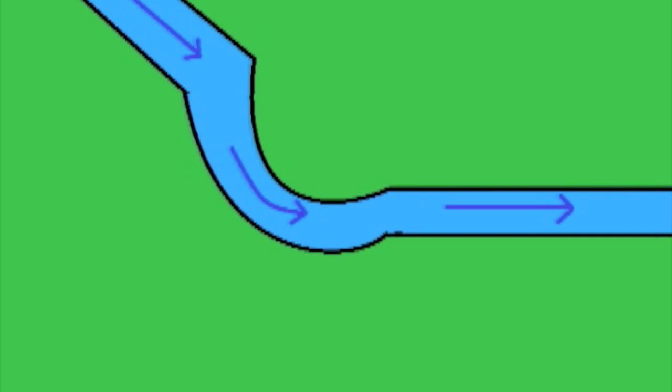The meander bend gets tighter. A really tight meander is called a swan's neck meander.